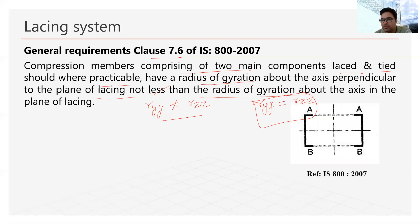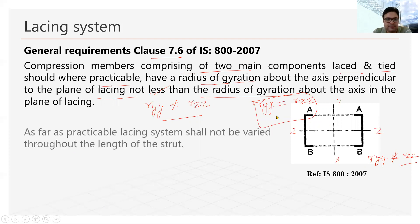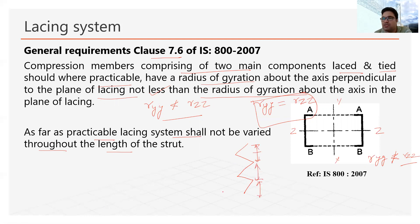Referring to the axis diagram: if z is the z-axis and y is the y-axis, then r_yy should not be less than r_zz — that is the condition being explained. Additionally, as far as practicable, the lacing system spacing shall not be varied throughout the length of the member — the panel length should be uniform and lacing should be provided at uniform spacing.